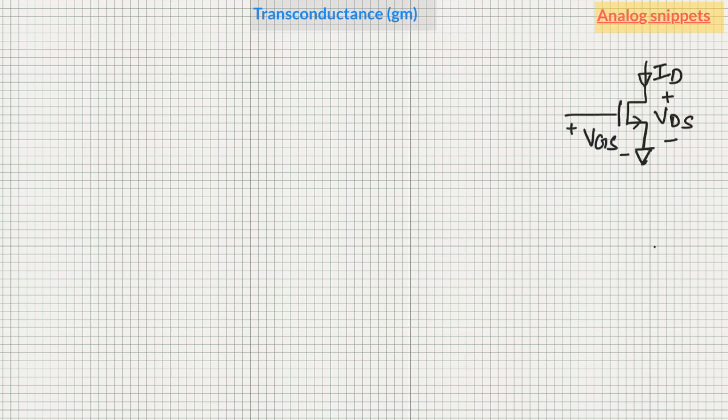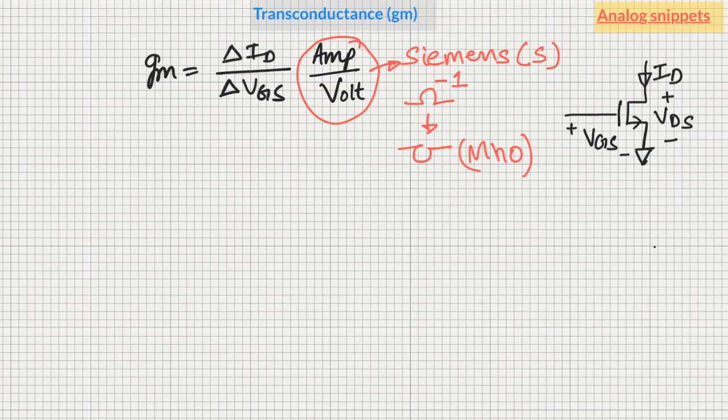We can understand gm in many different ways. Consider an NMOS with some positive VGS and positive VDS across it and a current ID flowing from drain to source. We can consider VGS as the input and ID as the output. When we change VGS, we'll get a corresponding change in ID, and this voltage to current gain is called transconductance or gm. So gm is change in drain current divided by change in gate-to-source voltage. The unit of gm is ampere per volt, which is also known as Siemens or S. This unit is inverse of resistance unit which is ohm, and it is also known as mho, which is ohm spelled in reverse.